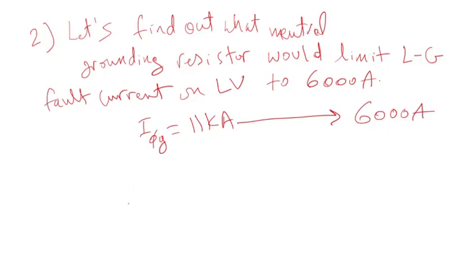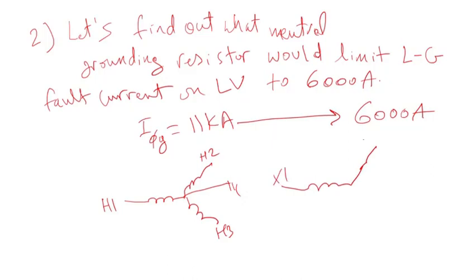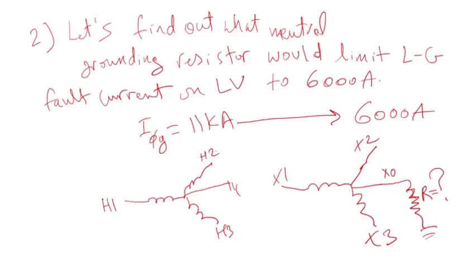In this case, if I draw the diagram: here's the high side — H1, H2 — which is grounded. The low voltage side has X1, X2, X3, then the X0 bushing. We want to add a resistor between the neutral point of the low voltage side and ground. Basically, we are adding impedance to limit the fault current to 6,000 amps.